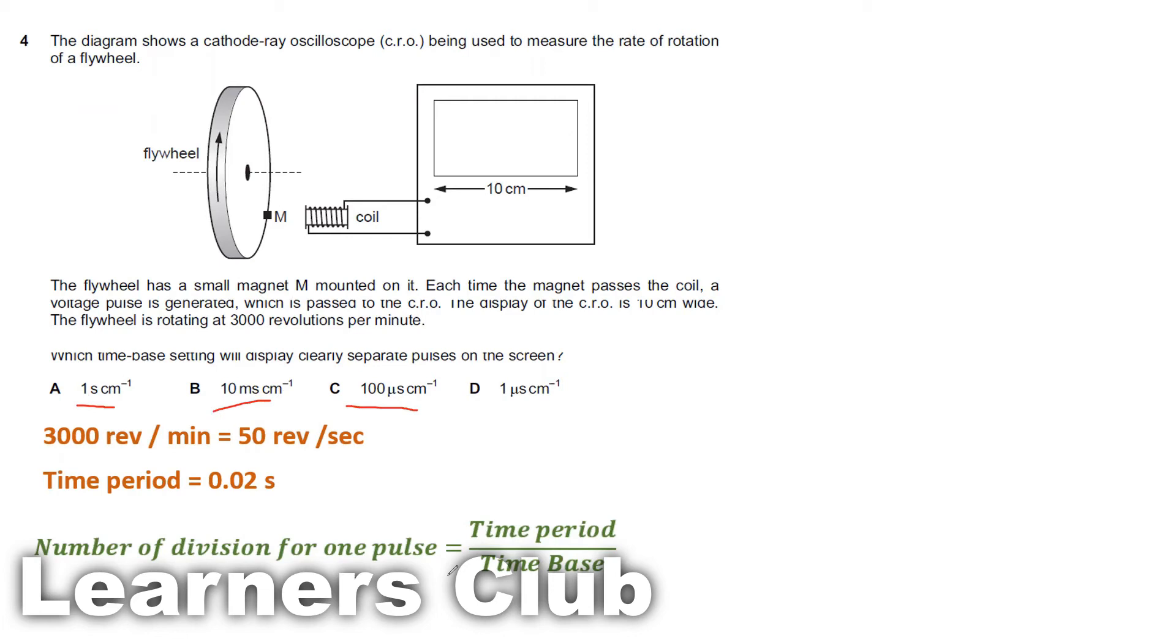Option A: one second per centimeter. One centimeter represents one second. Now our time period is 0.02 seconds divided by one second per centimeter, which gives 0.02 centimeter. Which means 0.02 centimeter will give me one pulse. It's not that clear because you will have so many pulses in this 10 centimeter. So that's not the right answer.